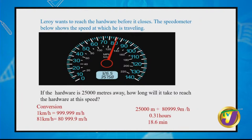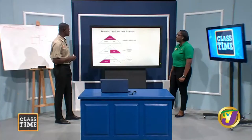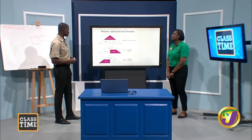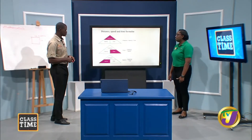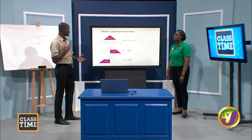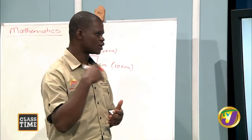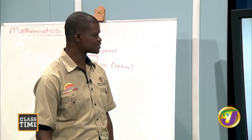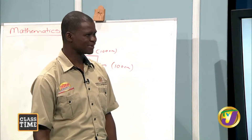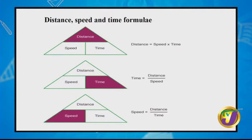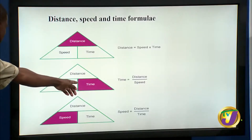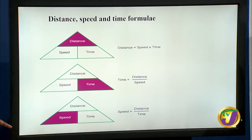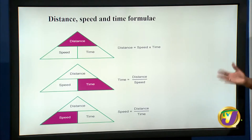Speed equals distance divided by time. Based on that formula, we can transpose it to find distance — speed × time — or time — distance ÷ speed. Students often use the DST triangle to help remember: covering the variable you want to find reveals the formula to use. Speed = D/T, Time = D/S, Distance = S × T.